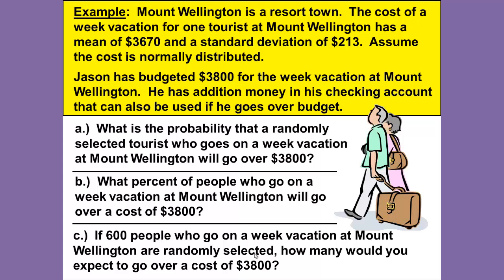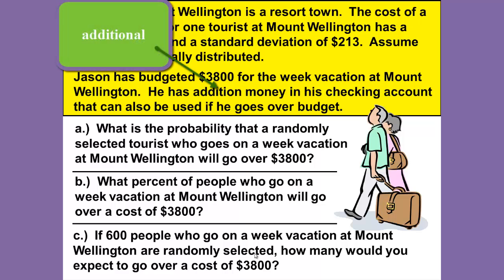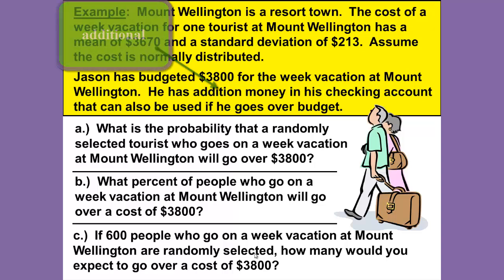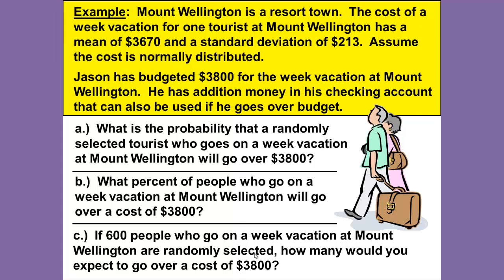Jason has budgeted $3,800 for the week vacation at Mount Wellington. He has additional money in his checking account that can be used if he goes over budget. What is the probability that a randomly selected tourist who goes on a week vacation at Mount Wellington will go over $3,800? We'll save Part B and C for when we get there.